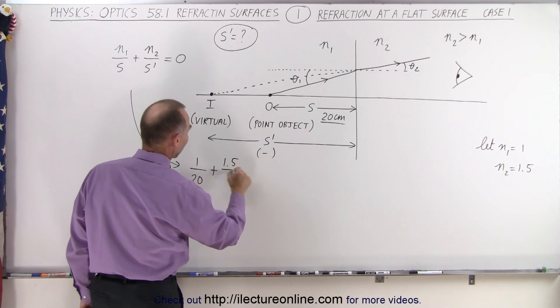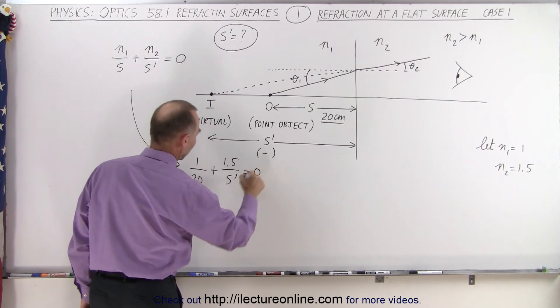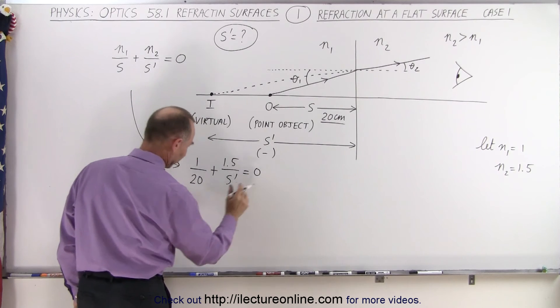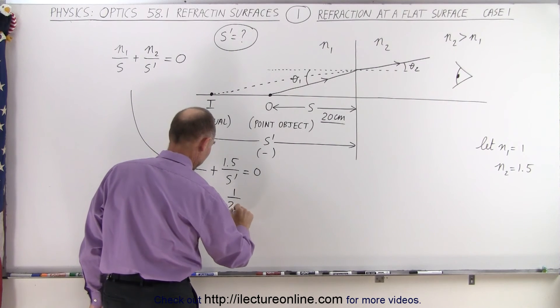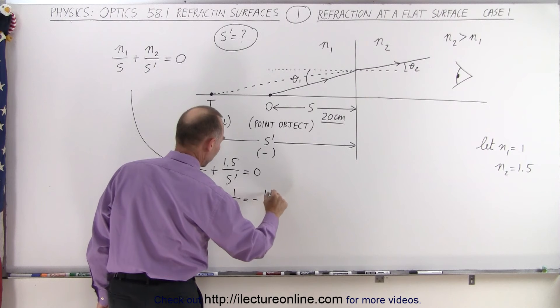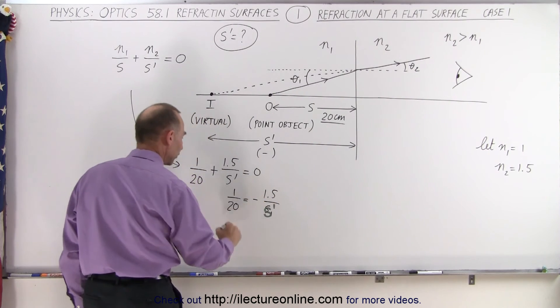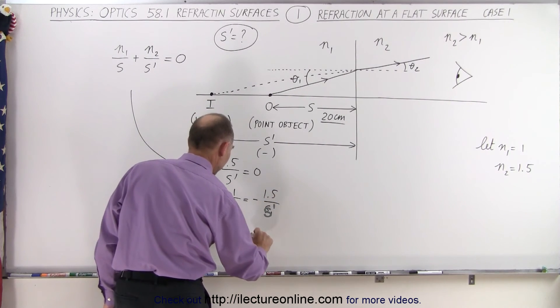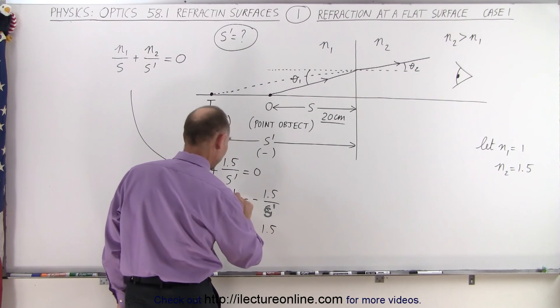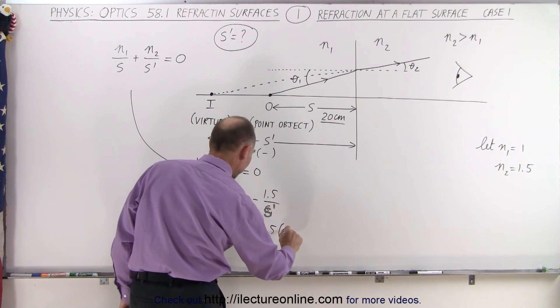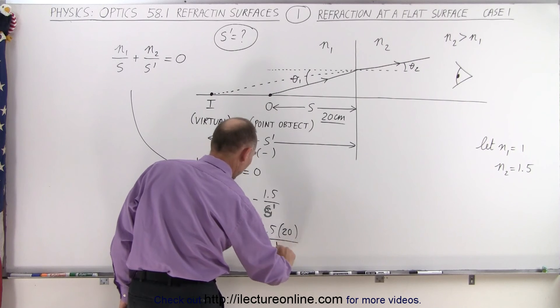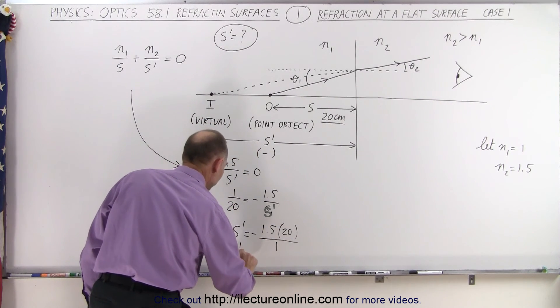So now let's move this to the other side. We have 1 over 20 is equal to minus 1.5 over s prime. So move that over here. We have s prime is equal to minus 1.5 times 20 divided by 1, and therefore you can see that s prime is equal to minus 30 centimeters.